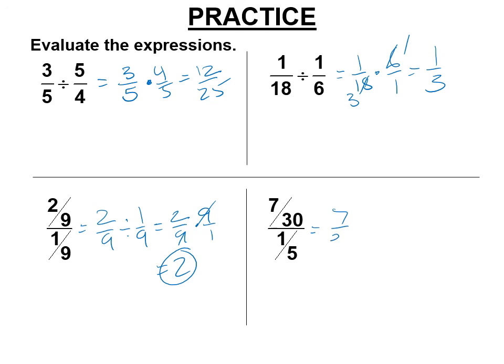7 30ths divided by 1 5th is the same as 7 30ths times 5. Cancel. And you get 7 6ths or 1 and 1 6th, and both of those are correct.